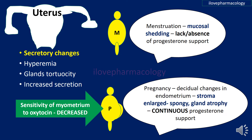Regarding actions of progesterone on the uterus: progesterone brings about secretory changes in the estrogen-primed endometrium, causing hyperemia; the glands become tortuous with increased secretion. In menstruating women, absence of progesterone support leads to mucosal shedding and menstruation. In pregnant women, continuous progesterone support brings about decidual changes — the stroma enlarges and becomes spongy, glands become atrophied. Importantly, progesterone decreases myometrial sensitivity to oxytocin, thereby reducing uterine motility and contractions.